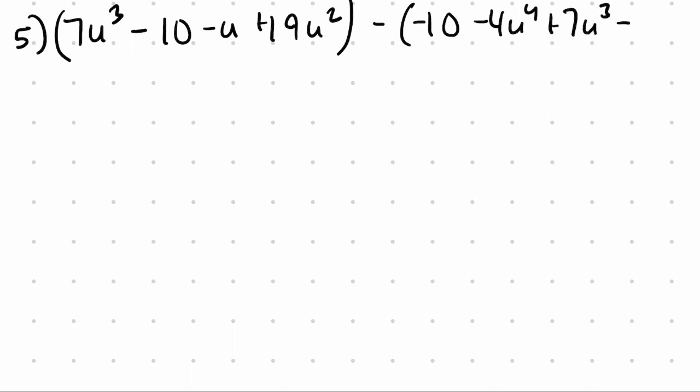So number 5 looks like this. It says 7u cubed minus minus 10 minus u plus 19u squared minus negative 10 minus 4u to the 4th plus 7u cubed minus u.